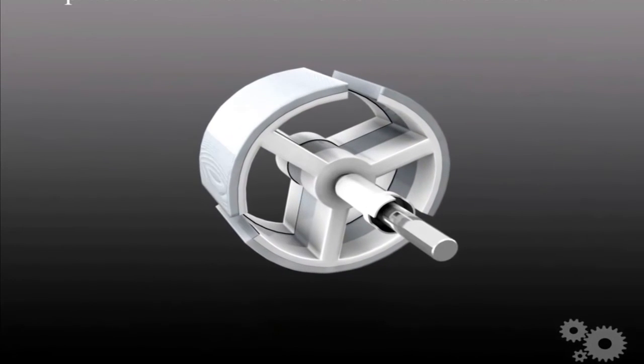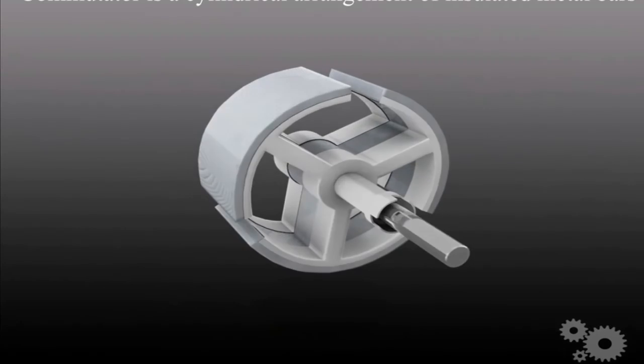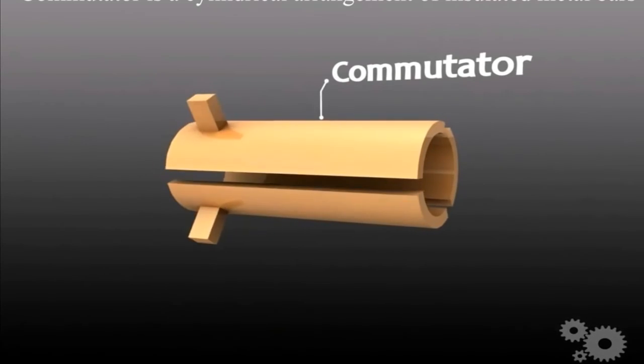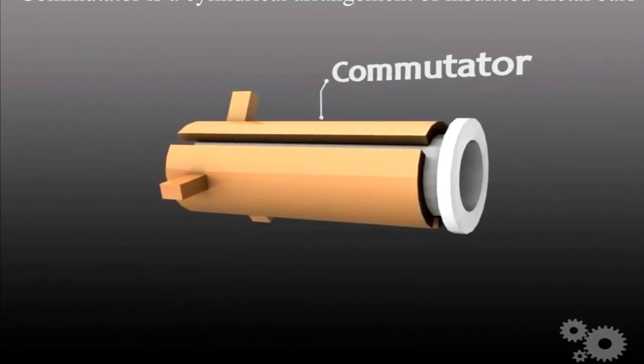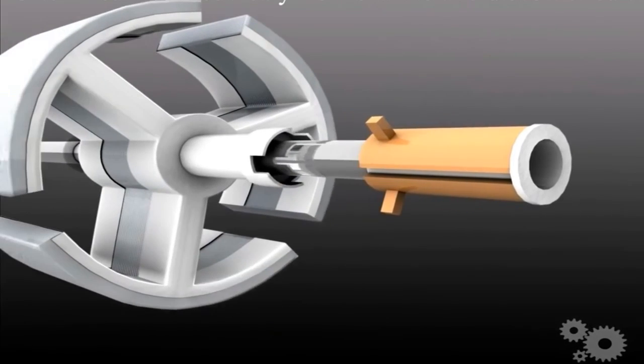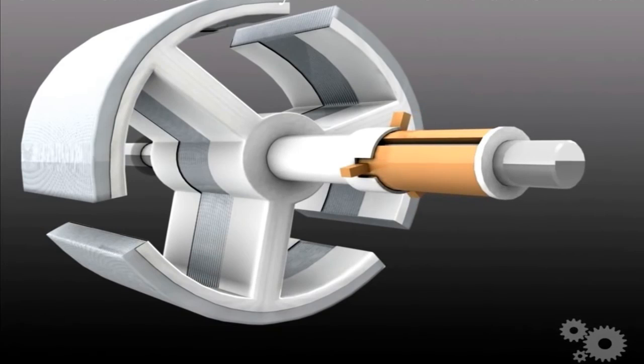A plastic commutator holder is fitted over the shaft which holds a commutator. Commutator is a cylindrical arrangement of insulated metal bars. It is also insulated from shaft electrically to avoid short circuit.